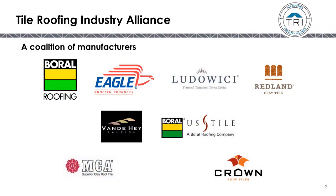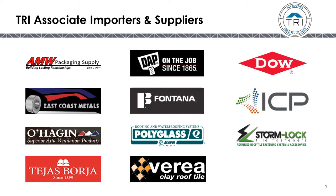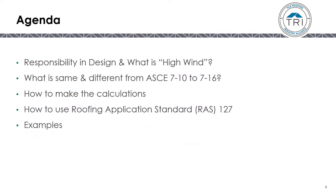The Tile Roofing Industry Alliance is a coalition of manufacturers, as well as associate importers and other suppliers. In this presentation, we'll discuss responsibility in design and what is defined as high wind, what is the same and different from ASCE-710 to the new ASCE-716 standard, how to make the calculations for tile roofs, how to use the roofing application standard RAS-127 for the high-velocity hurricane zone in Florida, and finally, we'll work through several examples.